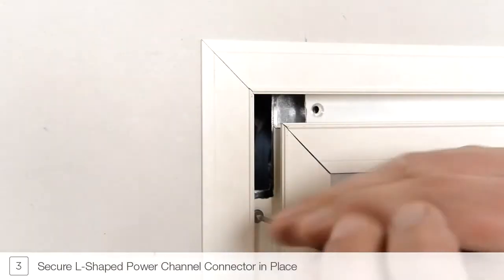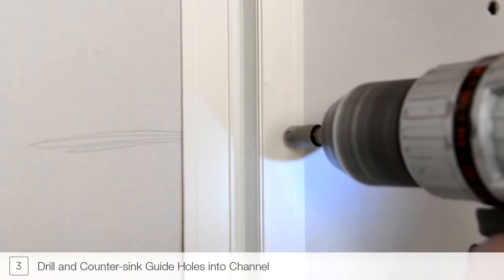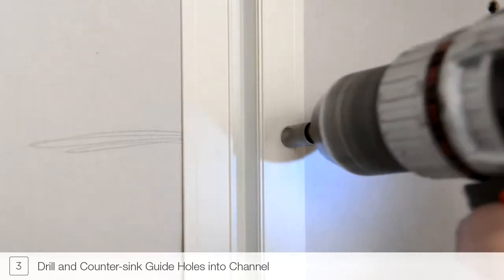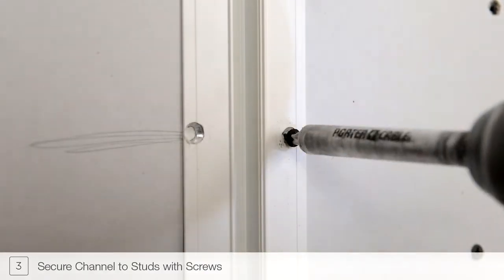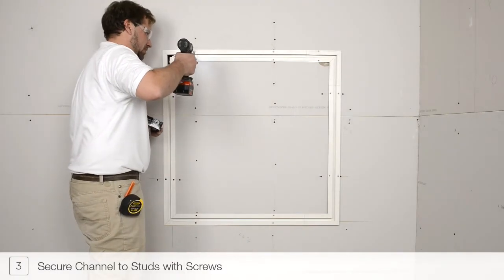Secure the L-shaped power connector to the junction box. Drill and countersink guide holes using the stud markings from previous steps. Secure the picture frame assembly to the drywall and mounting straps using drywall screws.